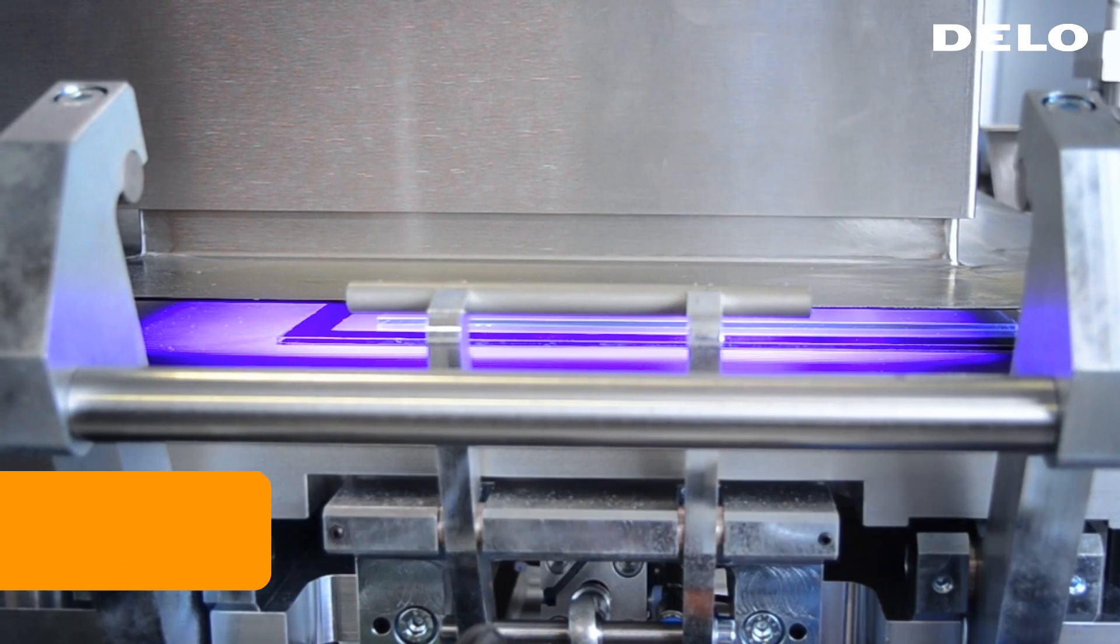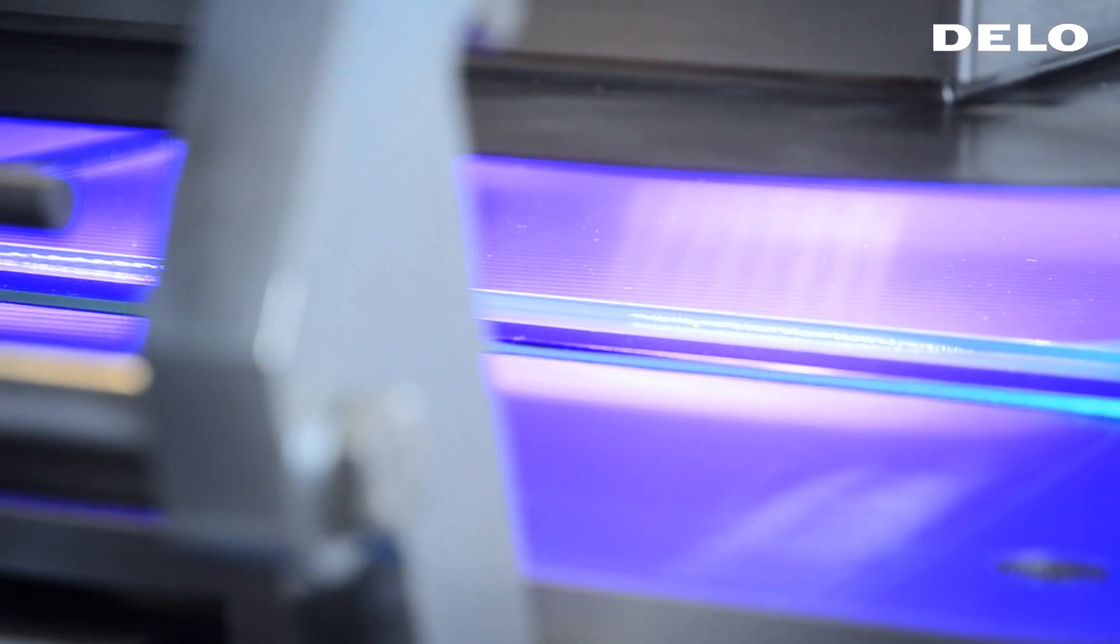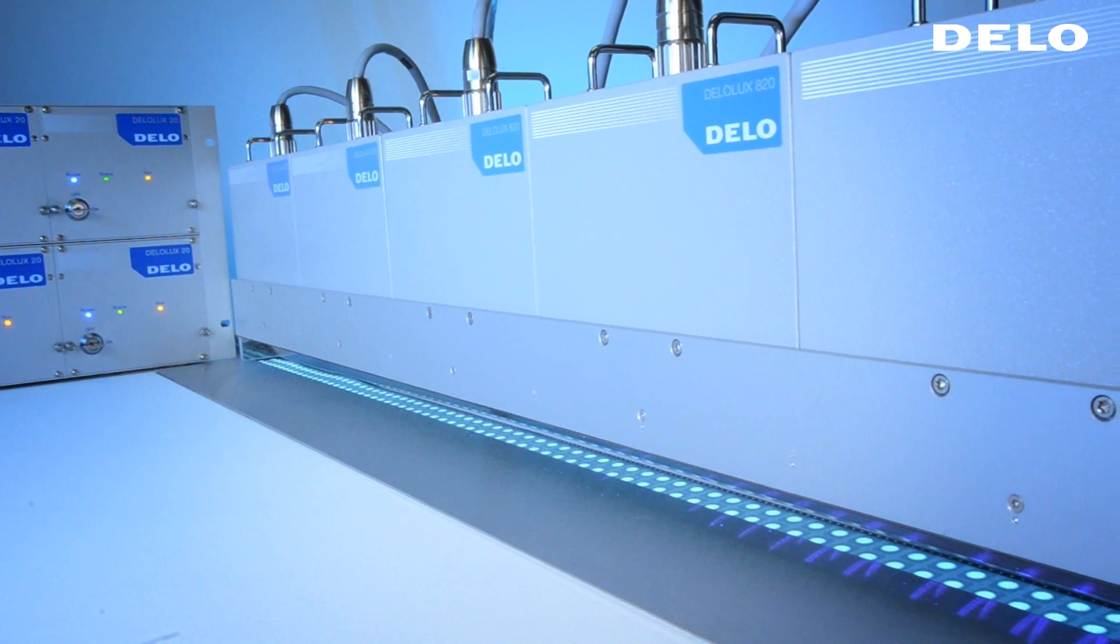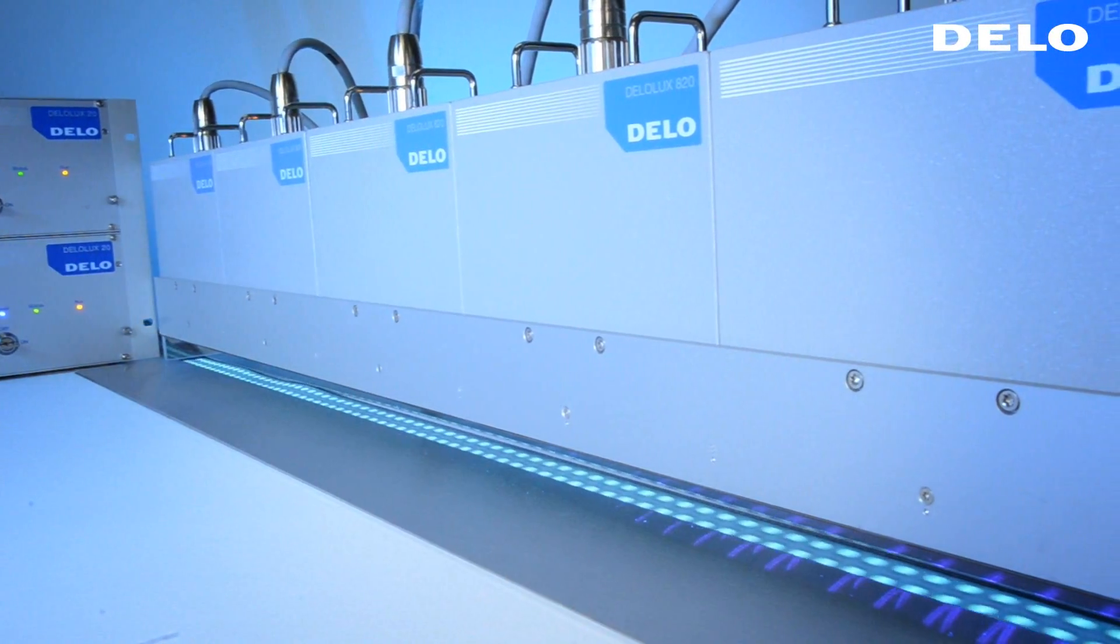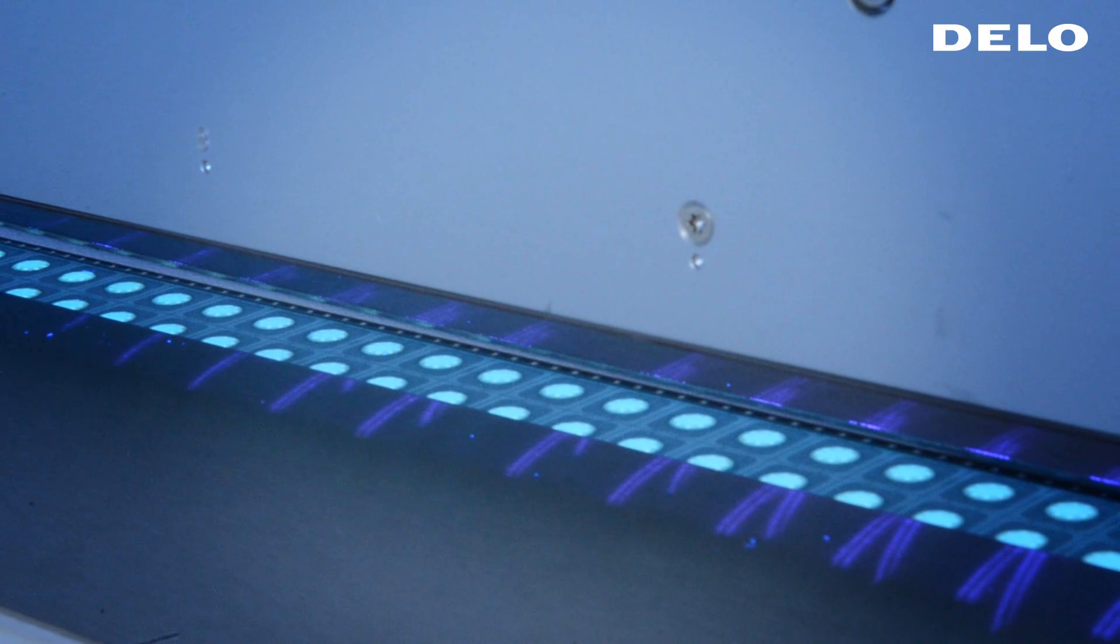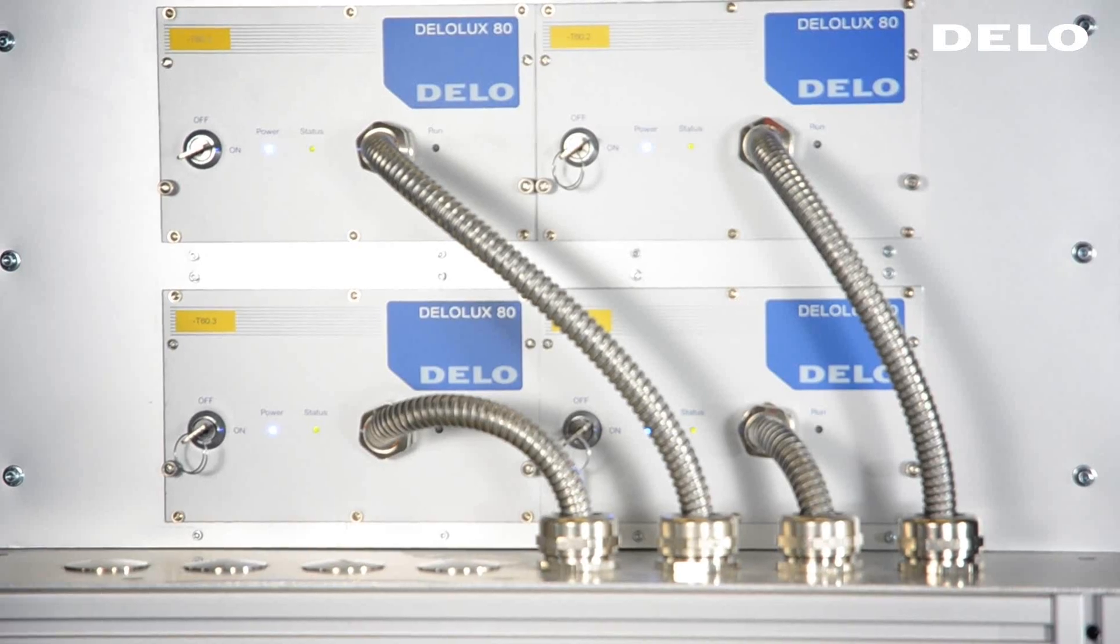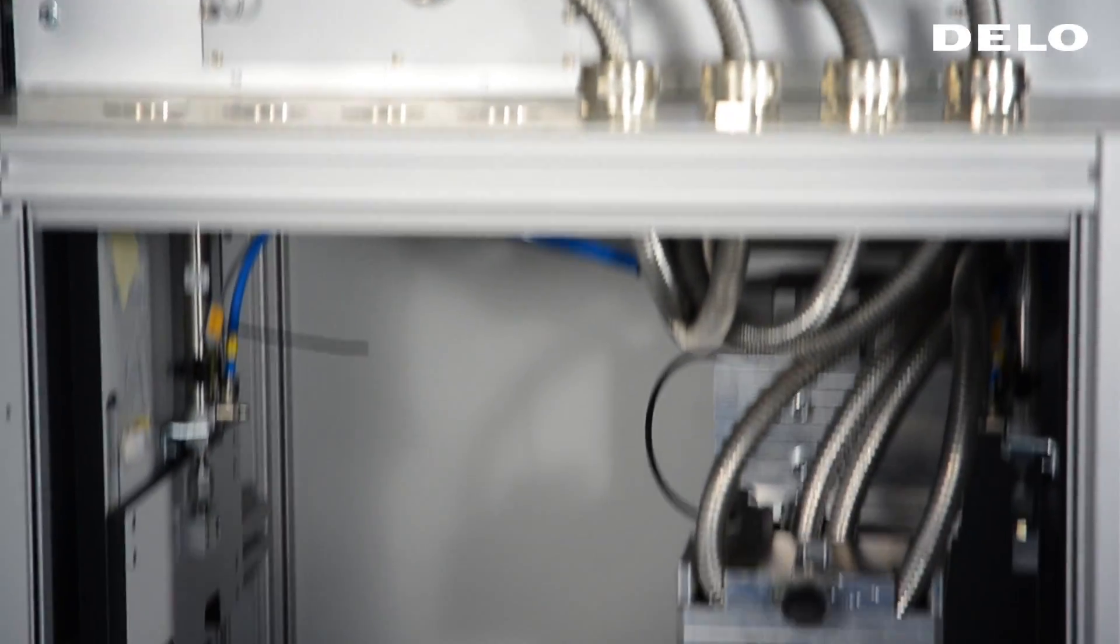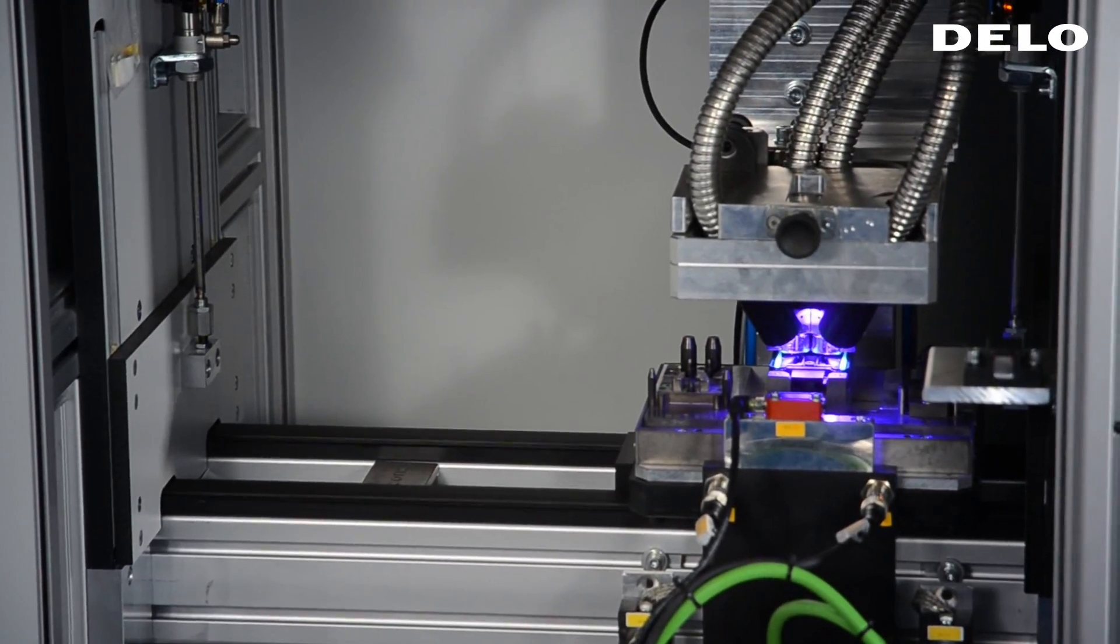When using UV curing adhesives, scattered light from the sun or other light sources have negative effects on yield or increase downtime. In this video we will show you how to prevent this from happening and how you increase the quality of your process significantly.